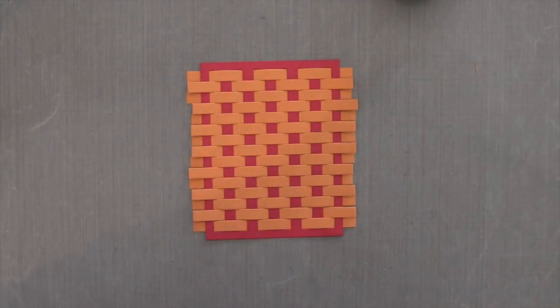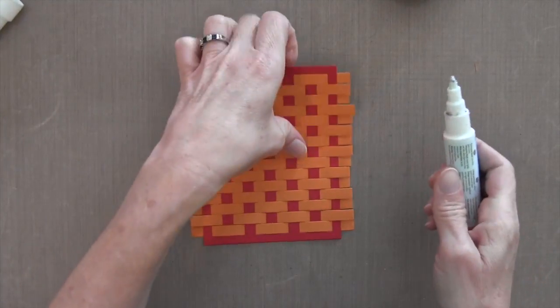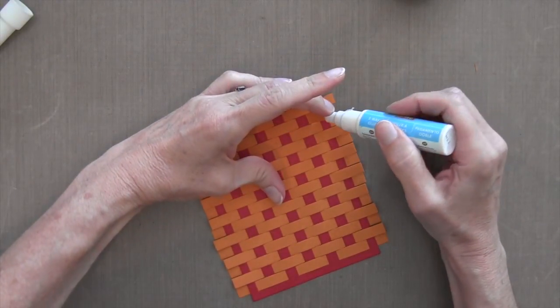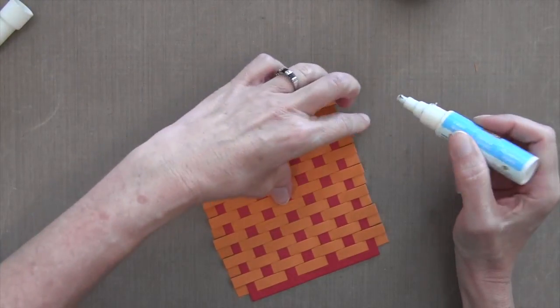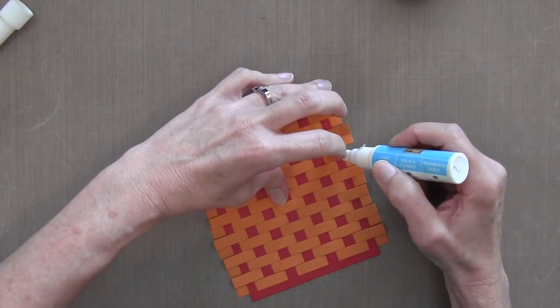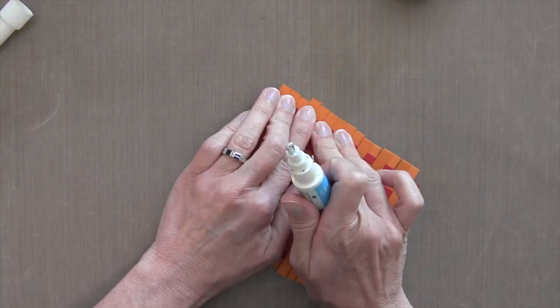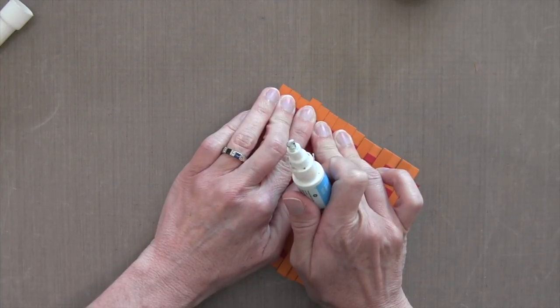The next step is to secure all these ends into place. I decided to use a two way glue pen which is pretty precise in its application and I don't have a whole lot of liquid coming out so it's just the perfect amount and when you press down on it you can see I'm doing a little bit at a time and pressing down.